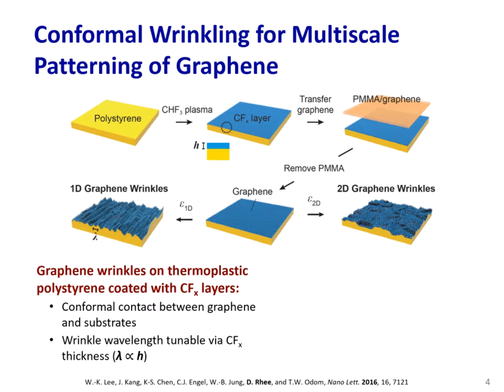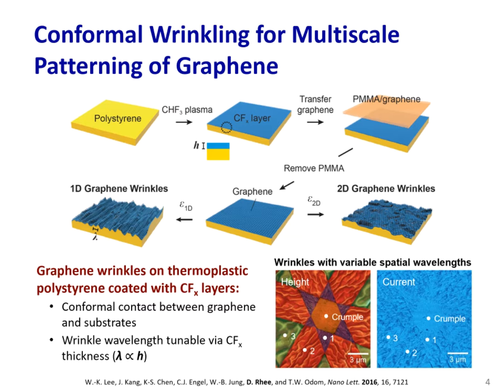To address these challenges, our group developed a conformal wrinkling strategy where we introduced a thin fluoropolymer layer between graphene and a pre-strained polystyrene substrate. The fluoropolymer layer suppressed delamination of graphene from the underlying support during strain relief, which resulted in sinusoidal wrinkle structures characterized by an average peak-to-peak distance, or wrinkle wavelength, lambda. Because the wavelength of the wrinkle is proportional to the thickness of the thin film, graphene wrinkle wavelength could be tuned from 70 nanometers to over micrometers by simply changing the fluoropolymer thickness h. More interestingly, we could create wrinkles with multiple distinct wavelengths on a single sheet of graphene by pairing fluoropolymer layers with different spatial thicknesses.